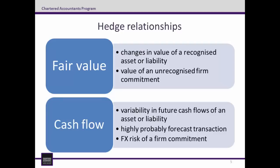Cash flow hedges are hedges to the exposure to the variability in future cash flows of an asset or liability, or a highly probable forecast transaction that could ultimately impact an entity's profit or loss. A hedge of the FX risk of a firm commitment can also be accounted for as a cash flow hedge. Continuing with the previous example, if I'm paying a fixed rate of 5% per annum on the £100,000 borrowing — meaning £5,000 per year — and I use a hedging instrument to mitigate my exposure to foreign exchange movements affecting the Aussie dollar value of my interest payments, this would be a cash flow hedge.